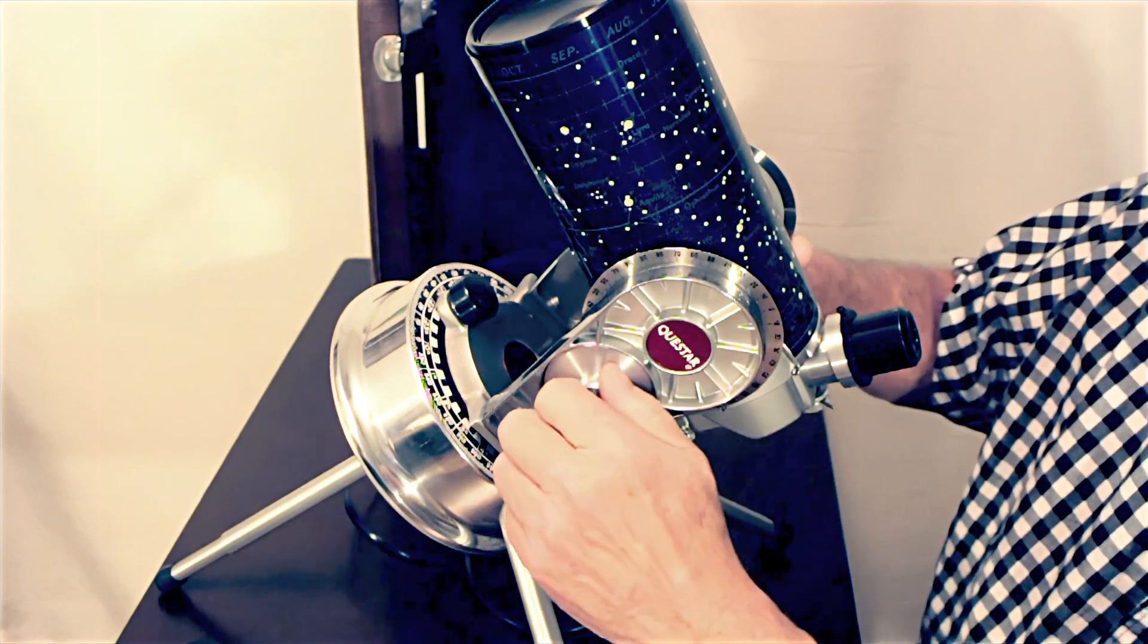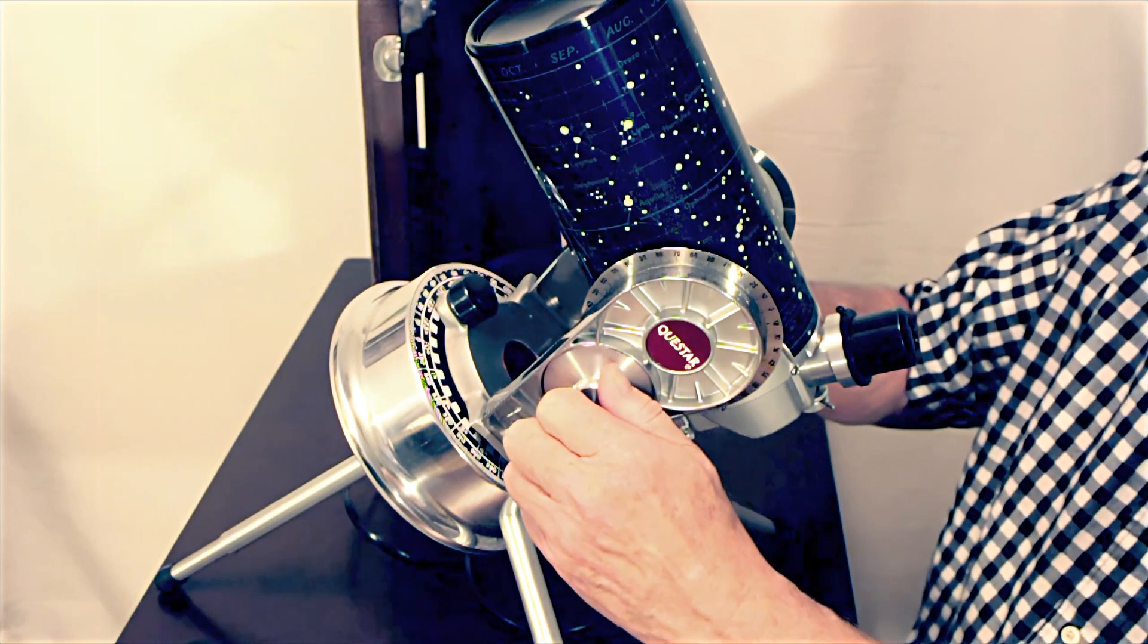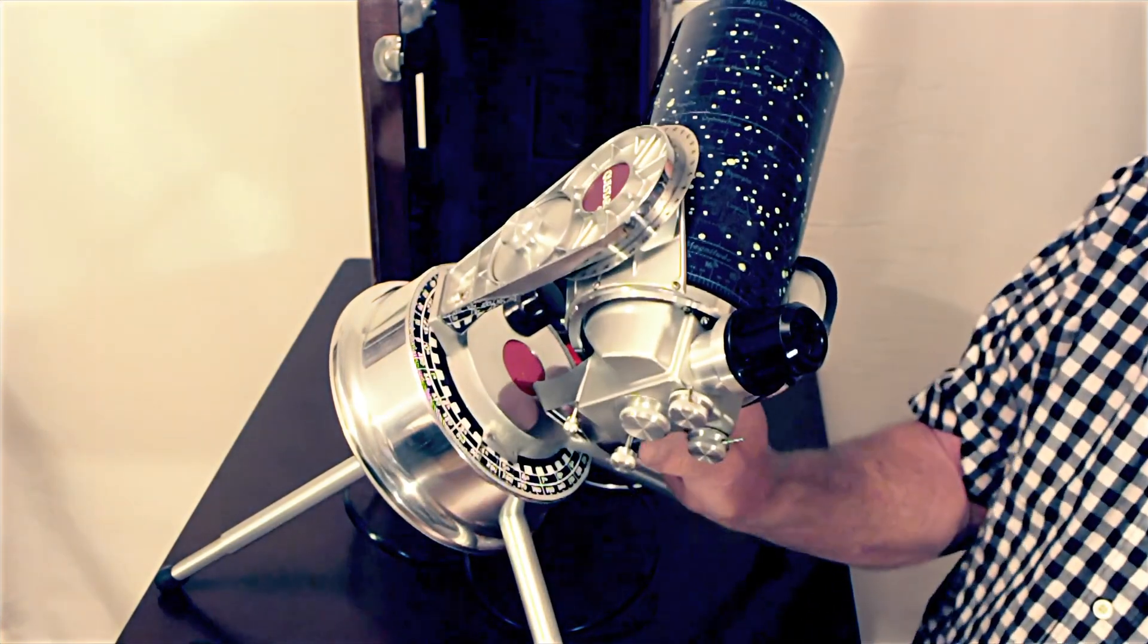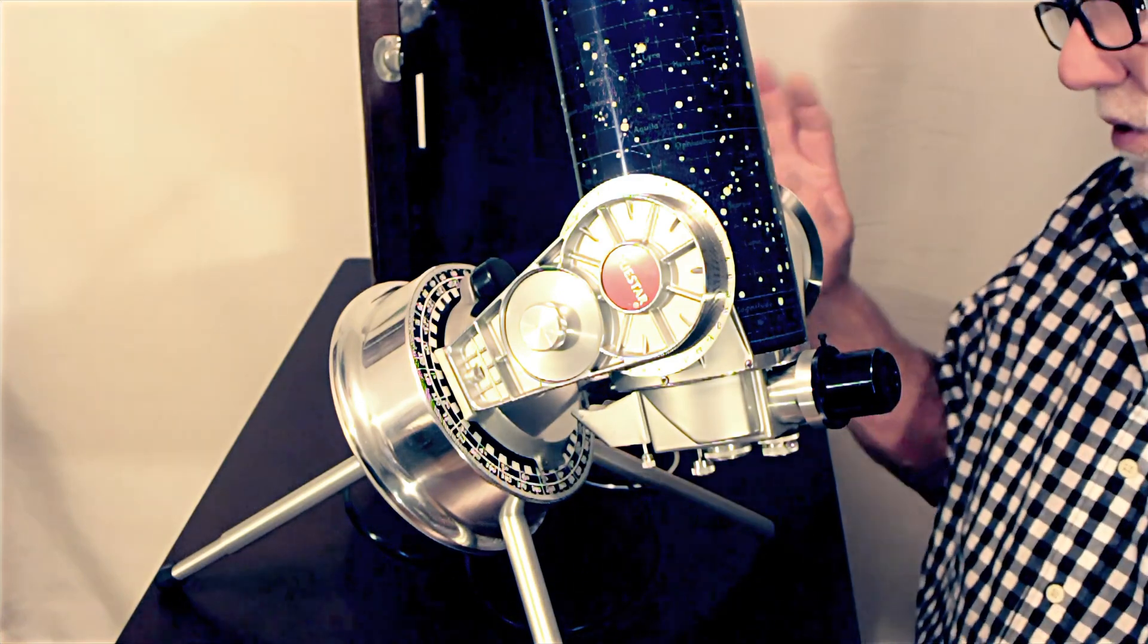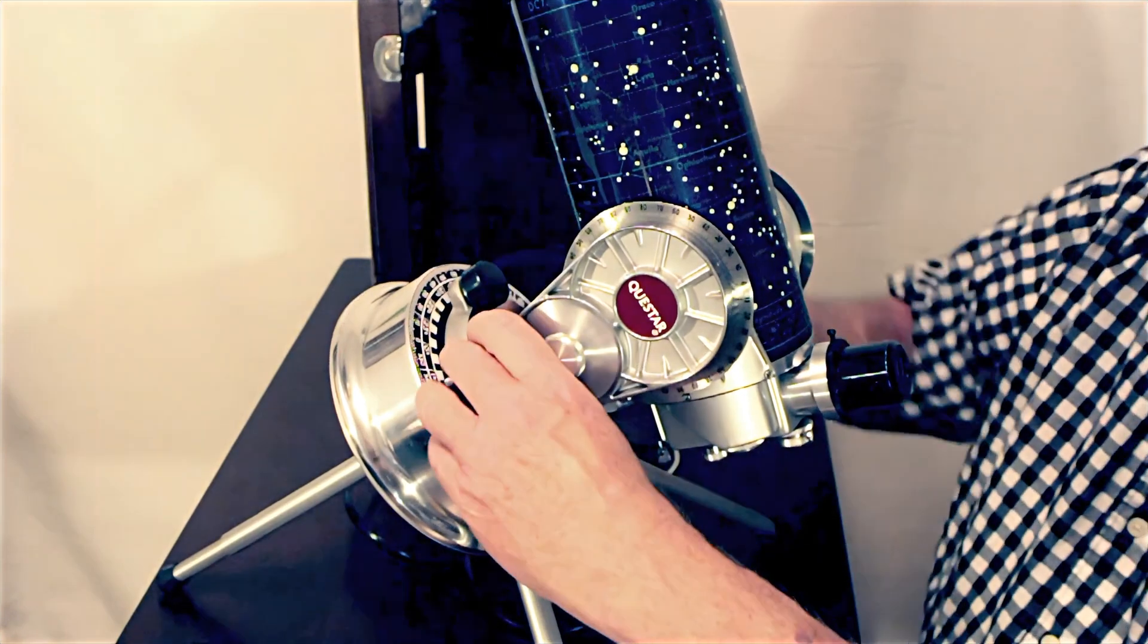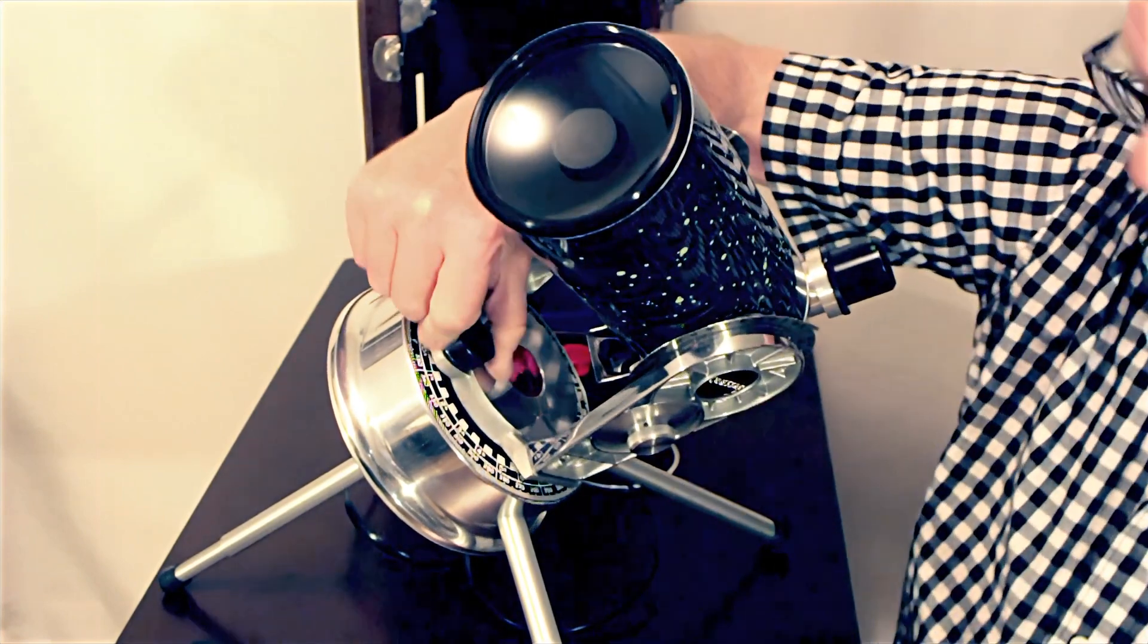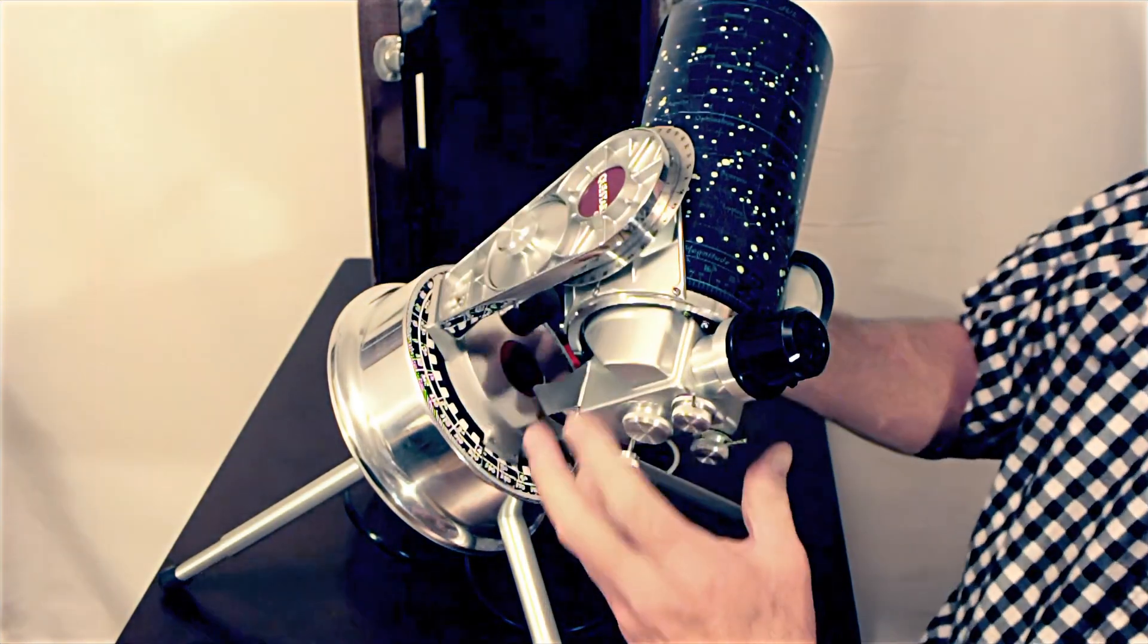Let me show you the controls here. This locks up, it locks or controls the friction on the declination axis. Declination axis, everything here is so smooth and the tracking is just beautiful also. So the tracking is very nice. Here's how you move the right ascension. You can move it by hand or you can use this. The friction, they've got friction control down to an arc here.